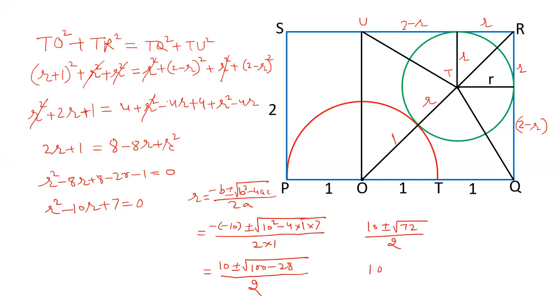100 minus 28 is 72 upon 2. 10 plus minus 72. Under root of 72, we can write this 72 as 36 root 2. So it is 6 root 2 by 2. We can take 2 common from this. So this will be 5 plus minus 3 root 2 upon 2 cancel out.